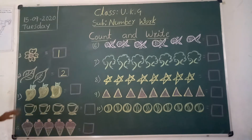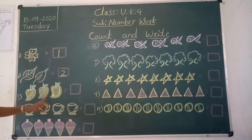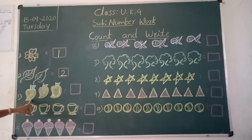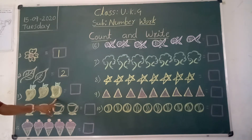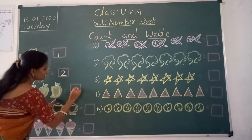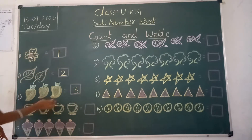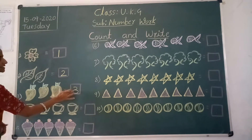Next picture. What are these? These are mangoes. How many mangoes are there here? One, two, three. How many? Three. So we should write in this box — three mangoes. We should write the number.